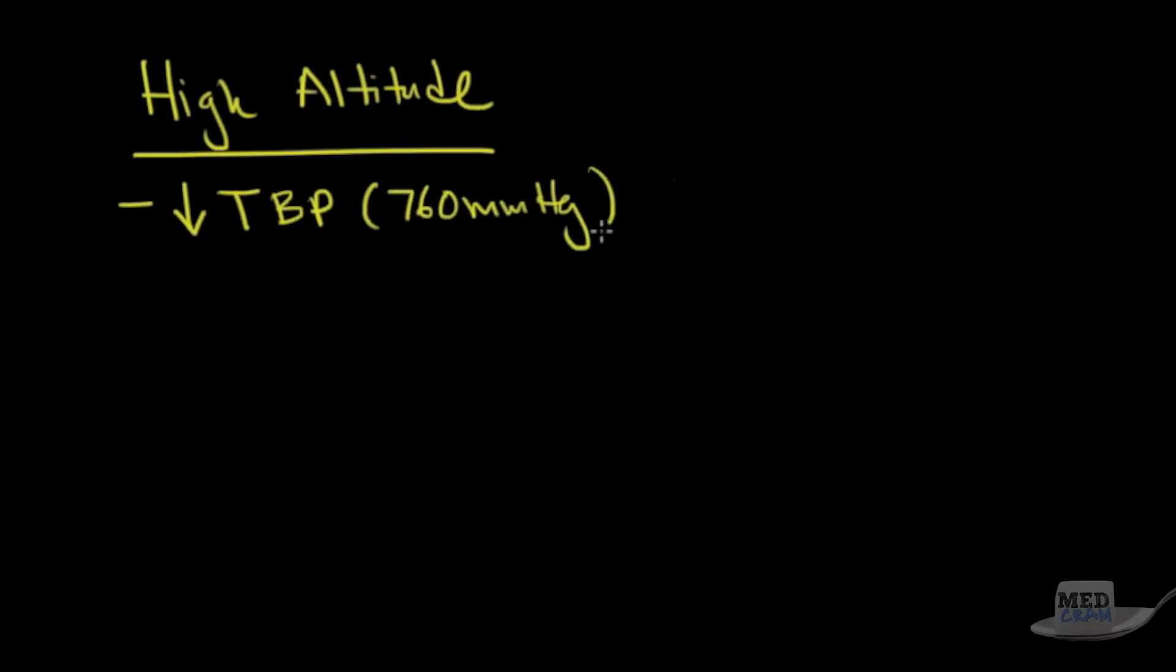So to review that high altitude. What we see there is it's a result of a decrease in the total barometric pressure, which is 760 millimeters of mercury at sea level. What we see here is that if we put on 100% oxygen, the PaO2 or the oxygen content in the blood actually goes up. So it responds, which is good.